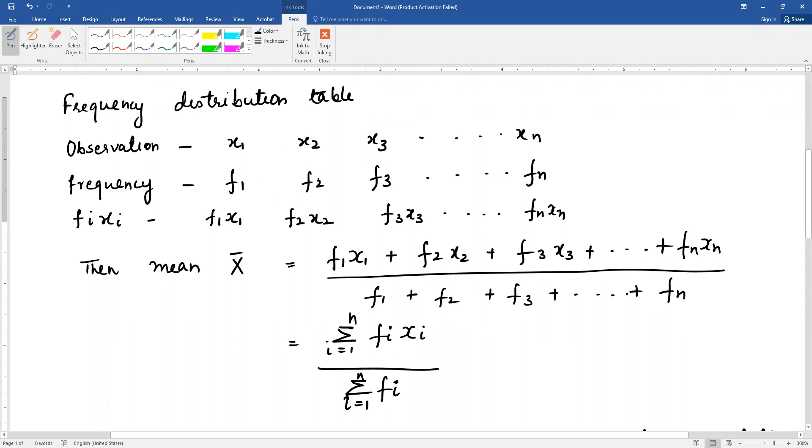Then mean equals f1 times x1 plus f2 times x2 plus f3 times x3, so on till fn times xn, whole divided by f1 plus f2 plus f3 plus fn, which is the total number of observations. In formula form we can write this as summation i varies from 1 to n, fi xi, whole divided by summation i varies from 1 to n, fi.